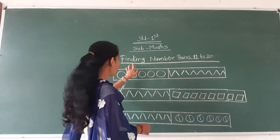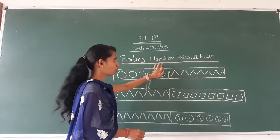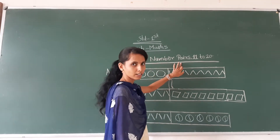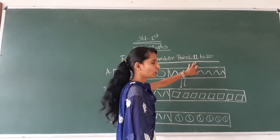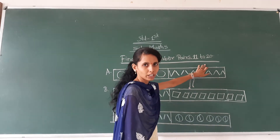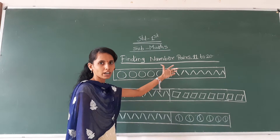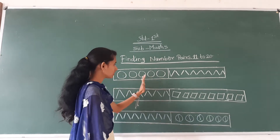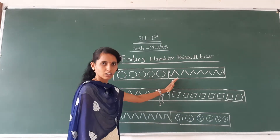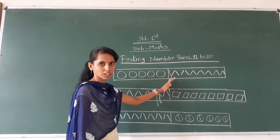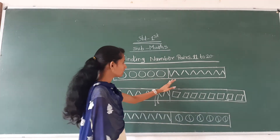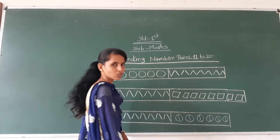After that we learn the finding numbers pairs 11 to 20 — finding numbers, which means finding numbers. This is the difference, see this is the difference.